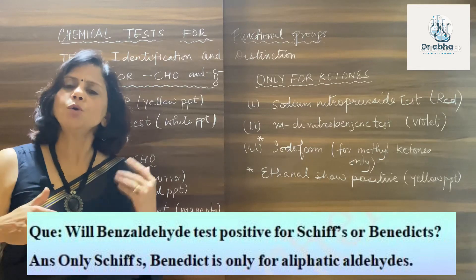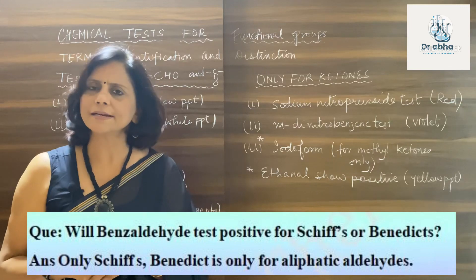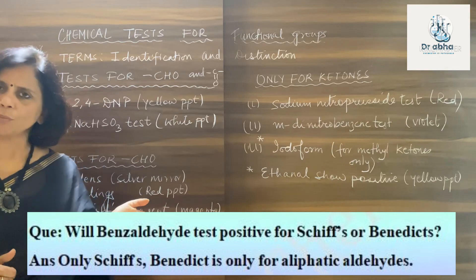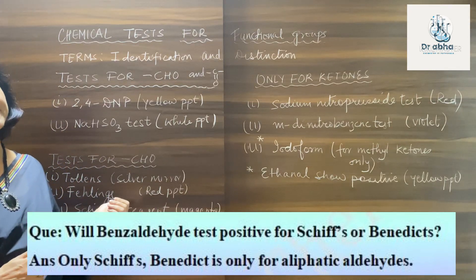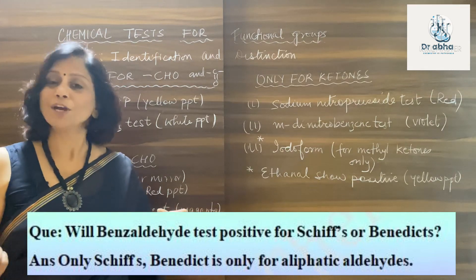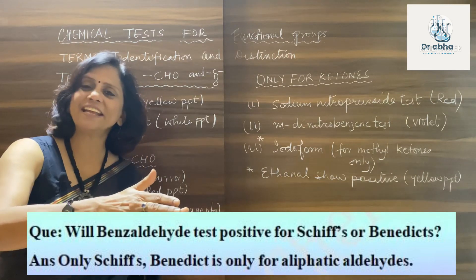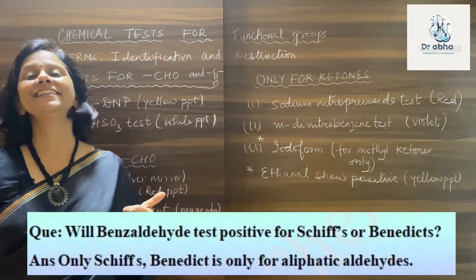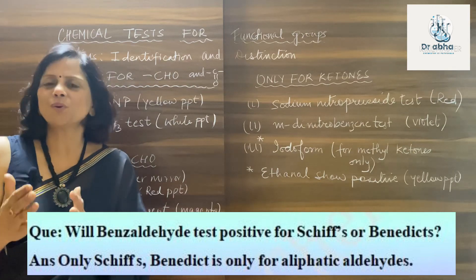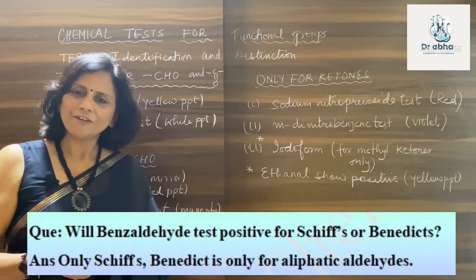Suppose the question is: how to distinguish between benzaldehyde and acetaldehyde? Benzaldehyde is an aromatic aldehyde; acetaldehyde is an aliphatic aldehyde. We can't use Tollens because it shows positive for both. We need a test that is positive for aliphatic aldehyde but not for aromatic aldehyde — and that is Fehling's test, which is a weaker oxidizing agent and works only on aliphatic aldehydes. So we use Fehling's.